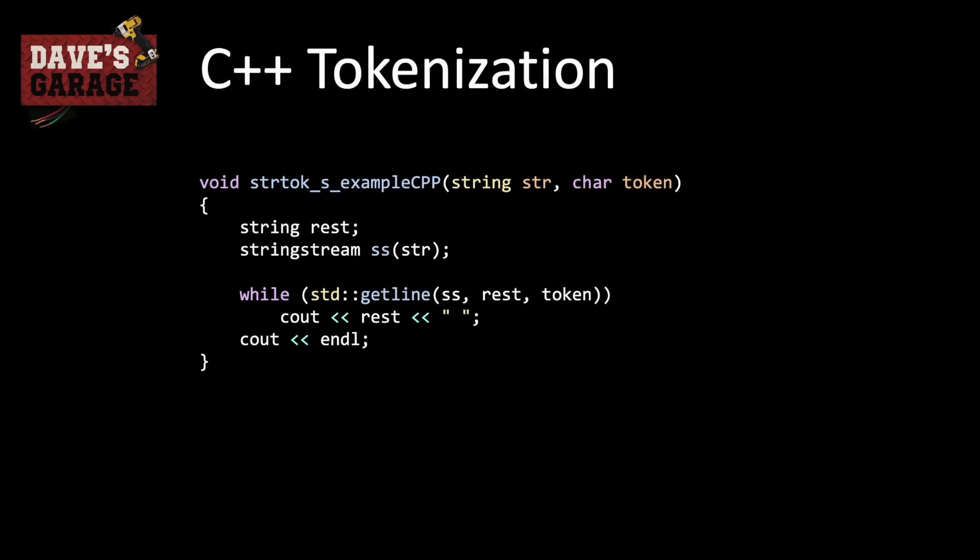In C++, it is similar but much easier. We use a stringstream initialized from the input string, and we use getline to read tokens out of it. As we do, we call cout on each token followed by a space. When done, we output an endline, and everything works exactly as expected.